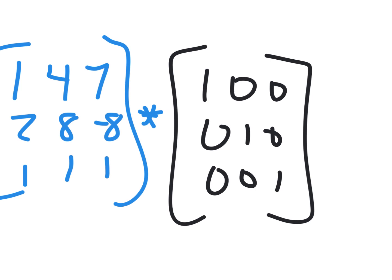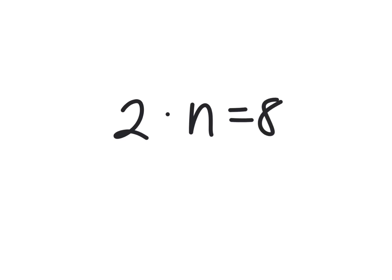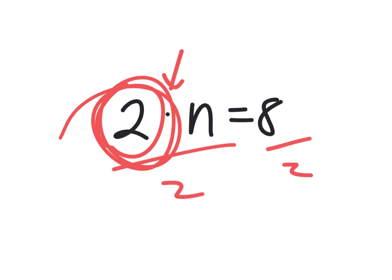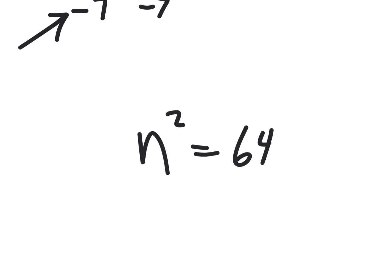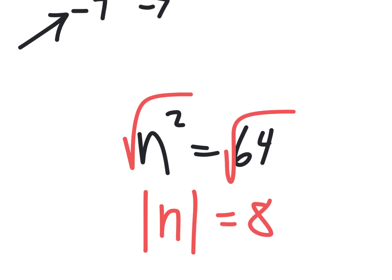Now there's something completely different called an inverse. If I have 2 times n equals 8, it's important to know that you divide to solve it — dividing by 2 is called its inverse. What if I said n plus 7 equals 8? You'd do minus 7, minus 7 — because that's the inverse of addition. Add and subtract are inverses. And n squared equals 64 — you'd take the square root. Squared and square root are inverses.